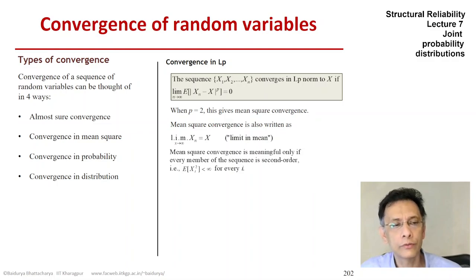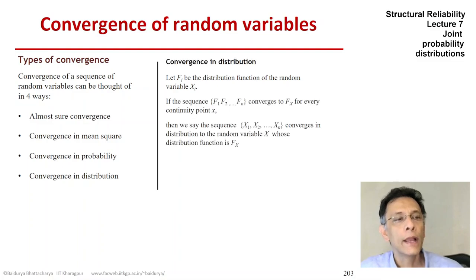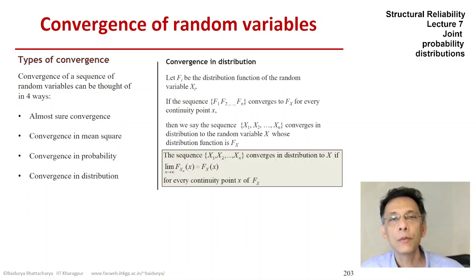The fourth mode of convergence is convergence in distribution. So if now we have a sequence of distributions, so each random variable Xi has the distribution Fi, and if the sequence converges to Fx for every continuity point of the function, then we say that the sequence of random variables X1 up to Xn converges in distribution to the random variable X, whose distribution is Fx.